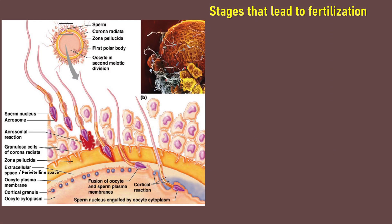There are a few stages that lead to fertilization. Fertilization is the fusion between sperm and ovum's nucleus to form a diploid zygote. This diagram shows sperm trying to penetrate the corona radiata, zona pellucida, and then enter the cytoplasm of the secondary oocyte.